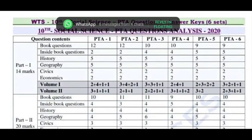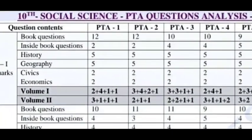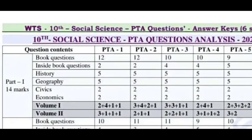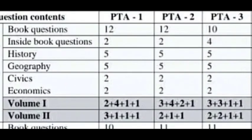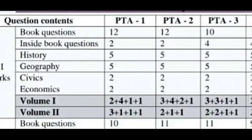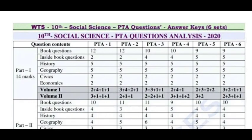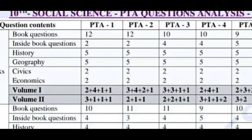If you look at it subject-wise, there are History, Geography, Civics, and Economics — 4 subjects in social science. If you look at PTA 1, the PTA model is the same across subjects. Confirm that this pattern will apply in the public exam as well. Subject-wise, Volume 1 covers History and Volume 2 covers History. Volume 1 also covers Geography.